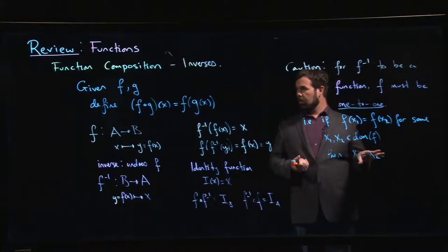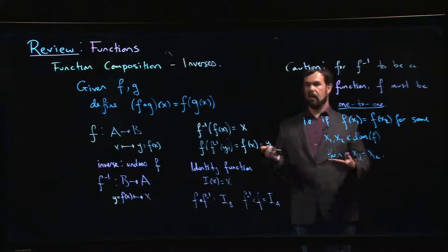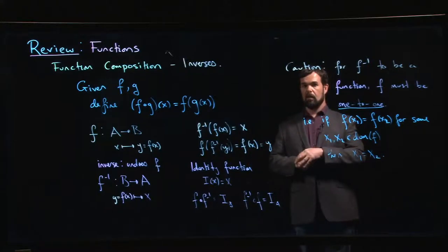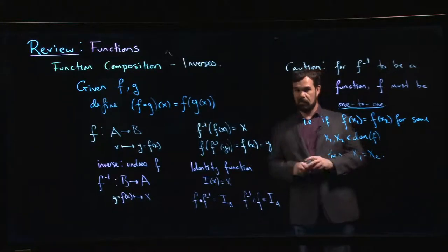So there's this issue of being one-to-one that you have to check. We can do one example with this to show you how you check for a function being one-to-one. How do you find the inverse? And then we're going to move on to other types of functions. I'll end here.